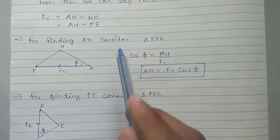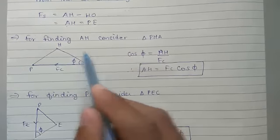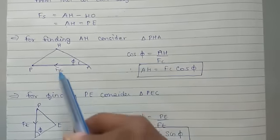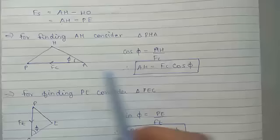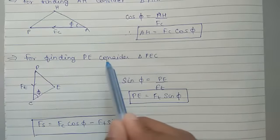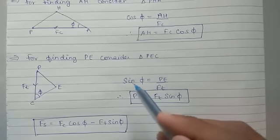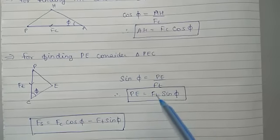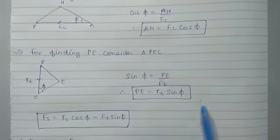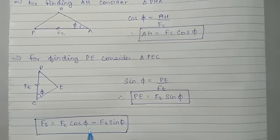For finding AH, consider triangle PH from the main Merchant Circle Diagram. This is the diagram which can be extracted from the Merchant Circle Diagram — the simplest form. So cos phi is equal to AH upon Fc, therefore AH is equal to Fc cos phi. So Fs is equal to AH minus PE. Substituting the values, Fs is equal to Fc cos phi minus Ft sin phi.